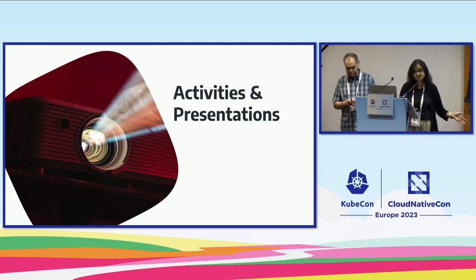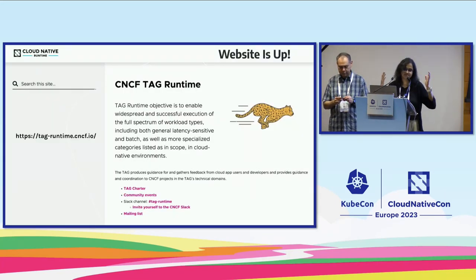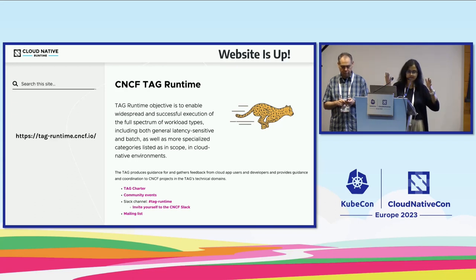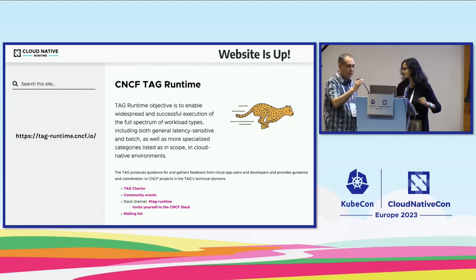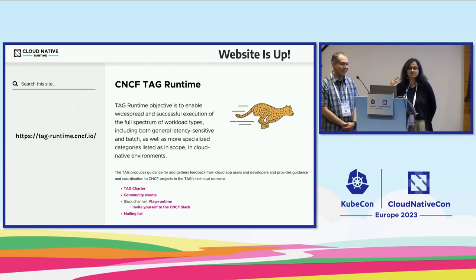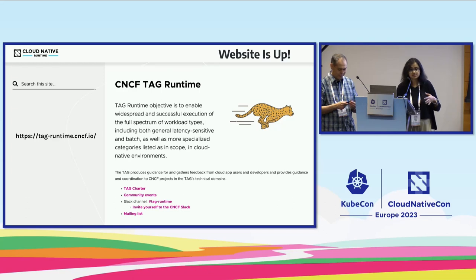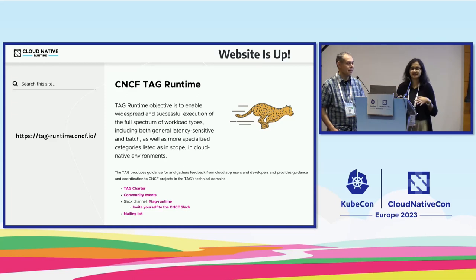We now have a shiny website of our own, thanks to support from the CNCF. If you head to tag-runtime.cncf.io, you can find all information about the TAG — meetings, Slack channels, and so on. We just got this done last week or the week before. We plan to add more information, especially what the working groups are up to, artifacts like white papers, and we hope to get more contributors this way.